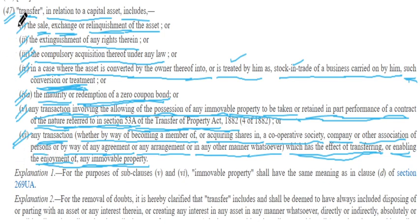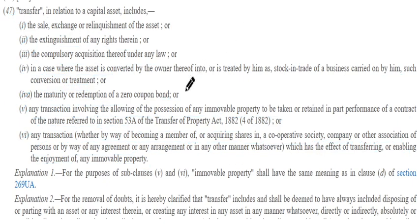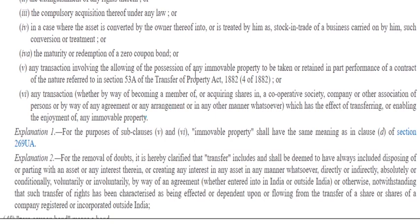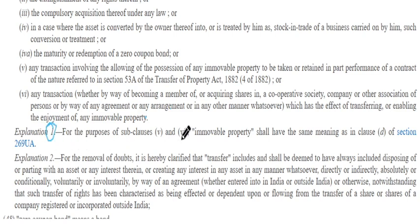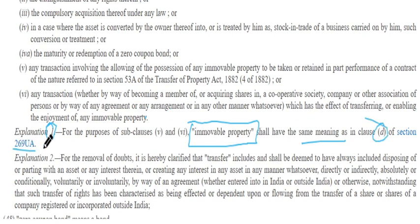So these things are included in the definition of transfer. Let's see the explanations. Explanation 1 explains 'immovable property' — it shall have the same meaning as in clause (d) of section 269UA.